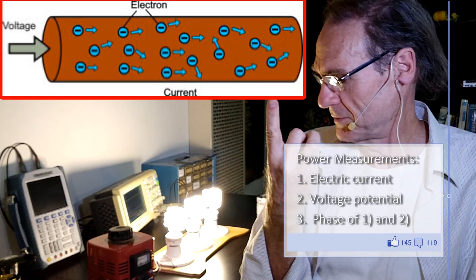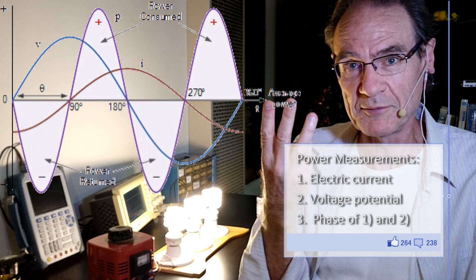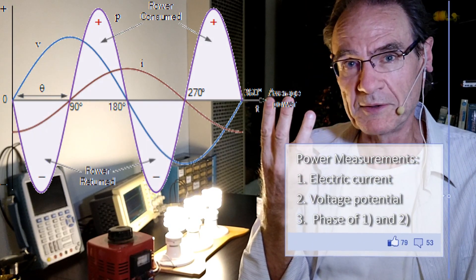What you need is three measurements when you measure an electronic device and maybe even more. You need the current and you need the voltage. But you also need the phase of the device between the current and voltage.